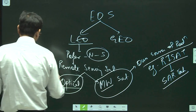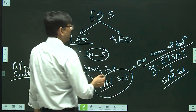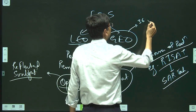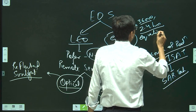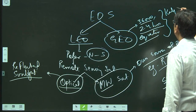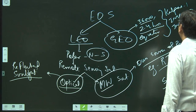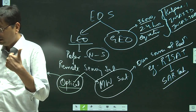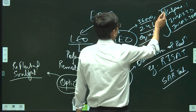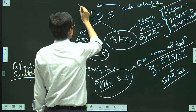Optical satellites work only during daytime since they rely on reflected sunlight, whereas microwave satellites can work during both daytime and nighttime. Geostationary Earth orbit satellites are at a height of 36,000 kilometers, with a time period of 24 hours, and are always positioned at the equator. In this category we have the satellite Kalpana-1 and INSAT 3D, INSAT 3DR.